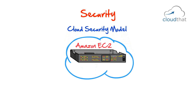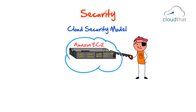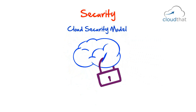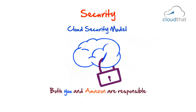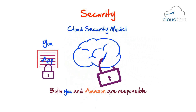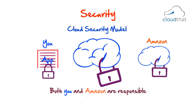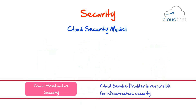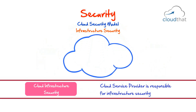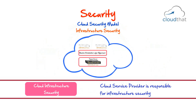The cloud security model: if you deploy a server on Amazon EC2 and it gets hacked, whose fault is it? The cloud security model is a shared security model — you and Amazon are both responsible for different parts of the cloud infrastructure. You are responsible for making sure your application is secure, and Amazon is responsible for making sure the cloud infrastructure is secure.